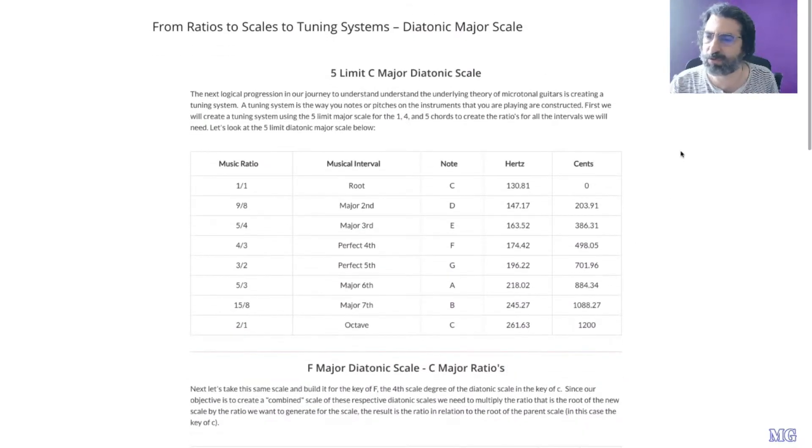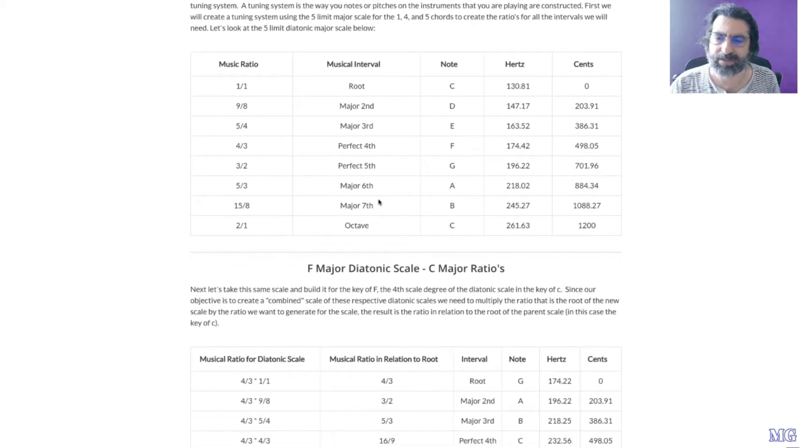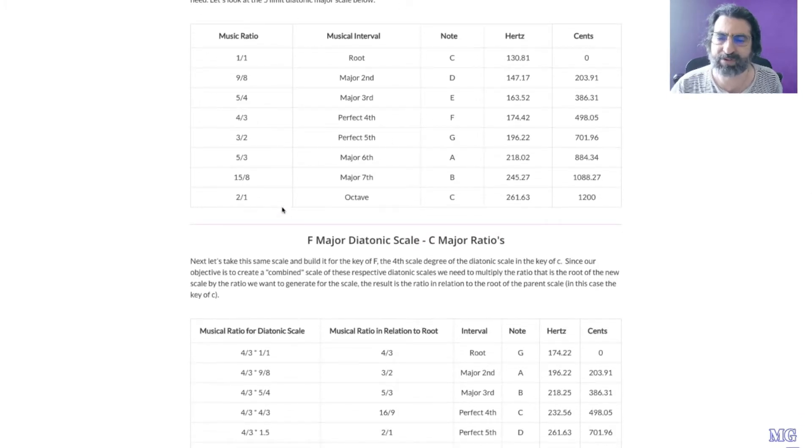So let's look at a quick overview of the diatonic scale and 5-limit tuning. 5-limit has primes of 5, 3, and 1 in its tuning system. This is the most basic form of just intonation and this scale is considered to be the most consonant sounding. We've got ratios for the root 1 over 1, major 2nd 9 over 8, major 3rd 5 over 4, perfect 4th is 4 over 3, perfect 5th is 3 over 2, major 6th is 5 over 3, major 7th is 15 over 8, and then your octave.